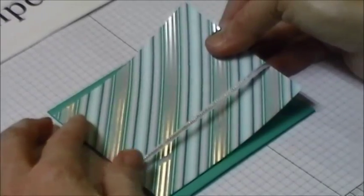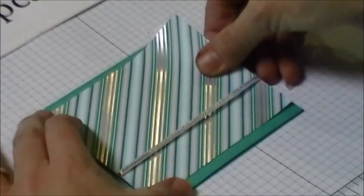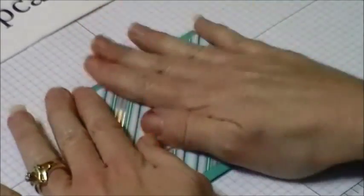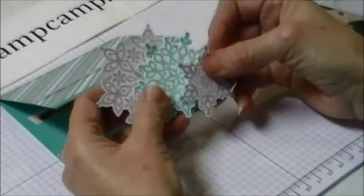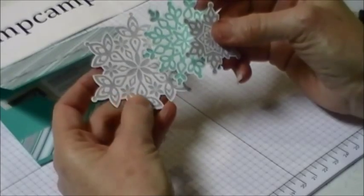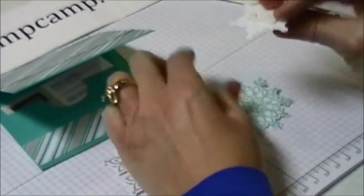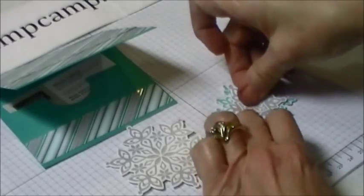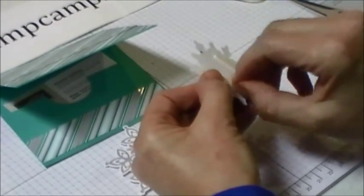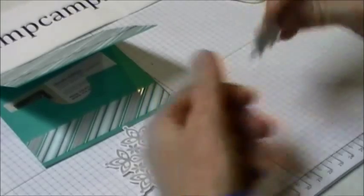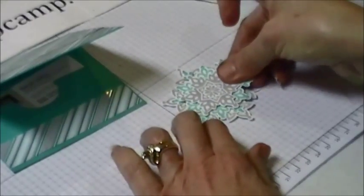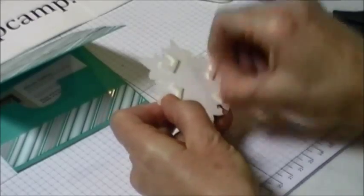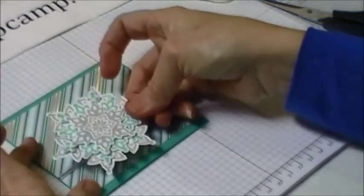Then I took the Festive Flurries and I stamped them in Smoky Slate, Bermuda Bay, and Smoky Slate again. I put some dimensionals on the back, cut them out with the framelits. I'm going to hate to see these gone in a couple weeks. This designer series paper, I love it. Place this however you want it on the front.